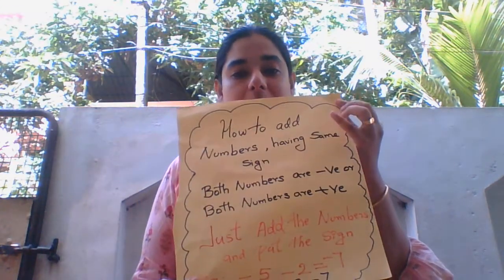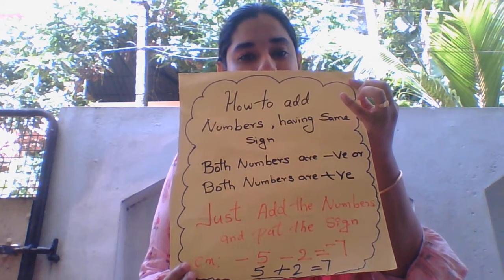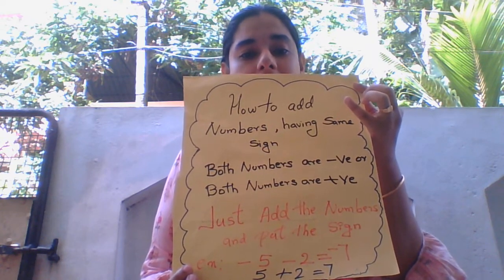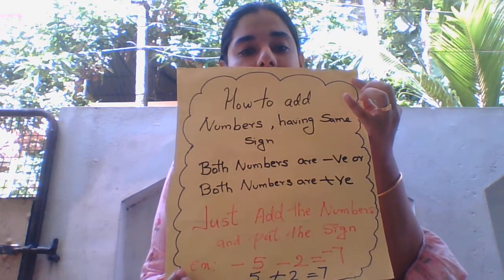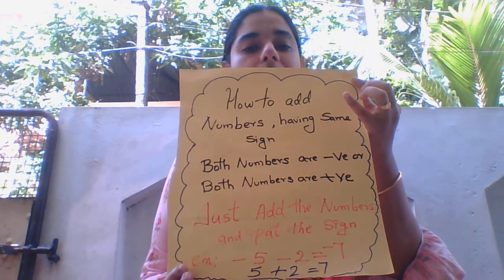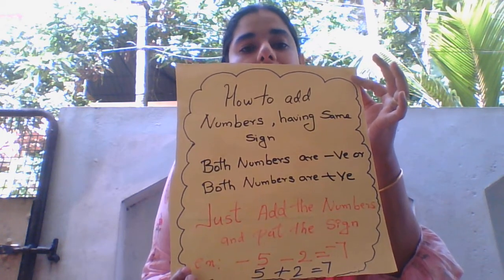Today we are going to study about how to add integers. Let us look first at how to add numbers having the same sign — if both are positive or both are negative. Tell any two numbers: 5 and 2. How will we add 5 and 2? 5 plus 2 equals 7.